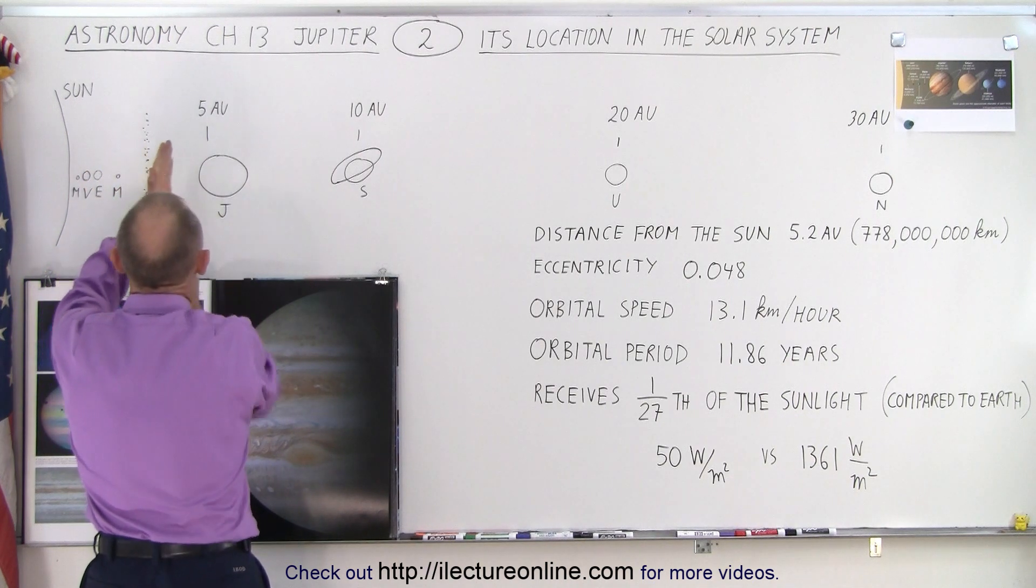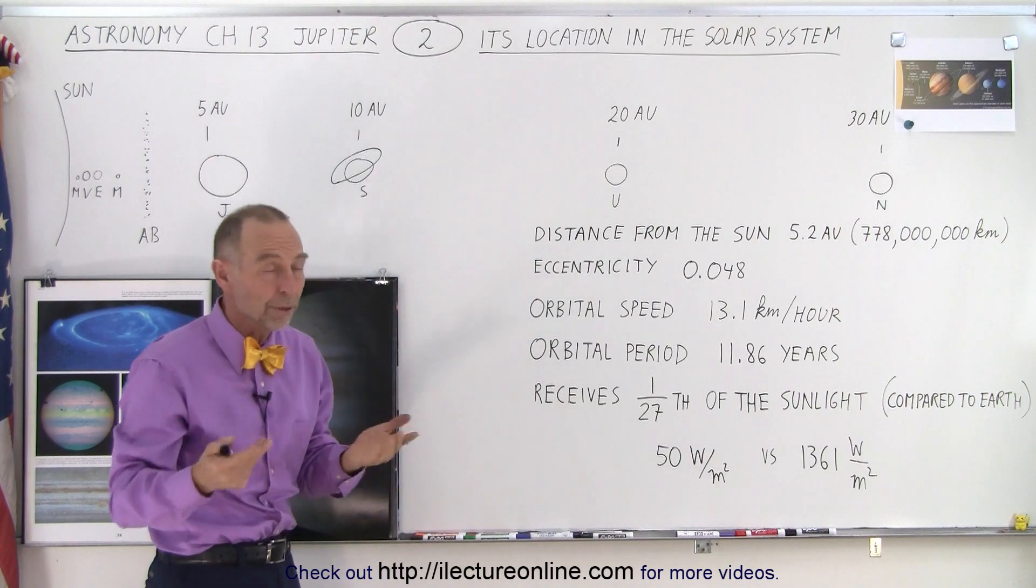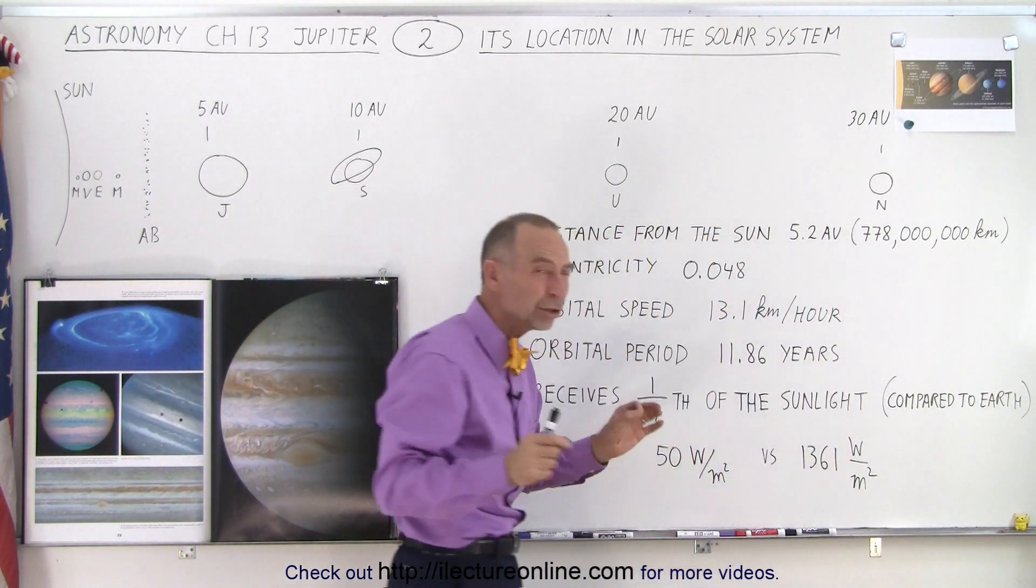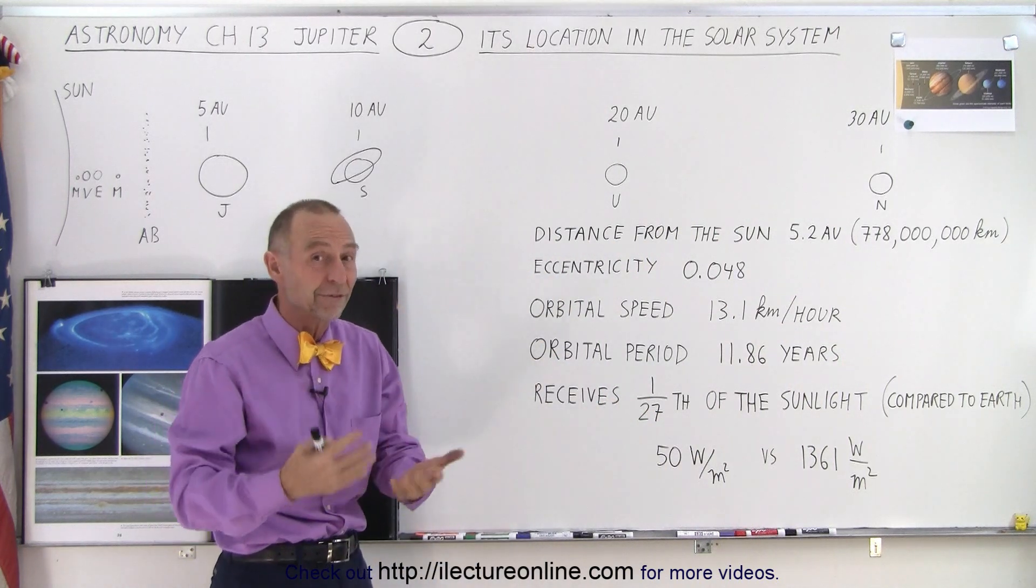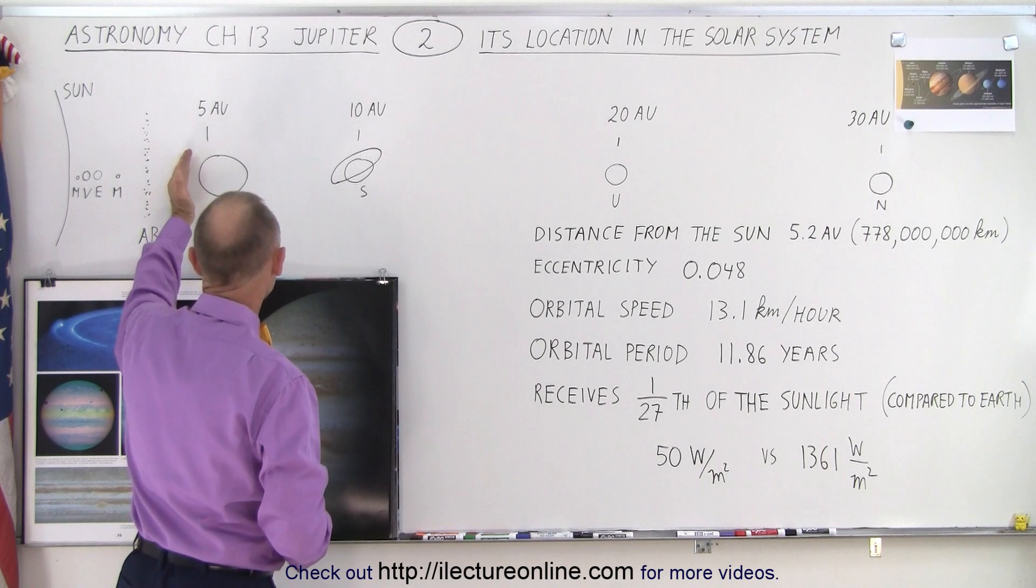Then we have the asteroid belt, and then at slightly over 5 astronomical units, 5.2 to be more precise, which is about 778 million kilometers, almost 500 million miles away from the sun, we have the first of the big gas planets: Jupiter.